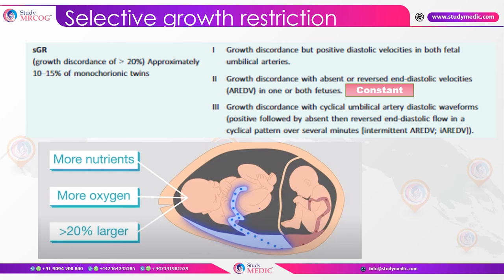sFGR is staged as follows: Stage 1 — growth discordance with normal Doppler, positive diastolic velocities in both twins' umbilical arteries. Stage 2 — absent or reversed end-diastolic velocity that is constant in one or both fetuses. Stage 3 — cyclical umbilical artery diastolic waveform, meaning the flow alternates between positive, absent, and reversed over several minutes; this is called intermittent absent/reversed EDV and qualifies as Stage 3 sFGR.